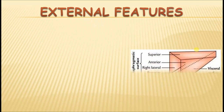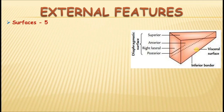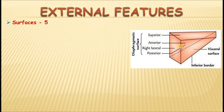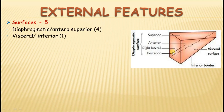Coming to the borders and surfaces of the liver: there are five surfaces, broadly classified into two — the inferior or visceral surface, related to surrounding abdominal organs, and the diaphragmatic surface, which is molded to the shape of the diaphragm. For description, the diaphragmatic surface is divided into anterior, superior, right lateral, and posterior surfaces. The remaining one is the visceral or inferior surface.